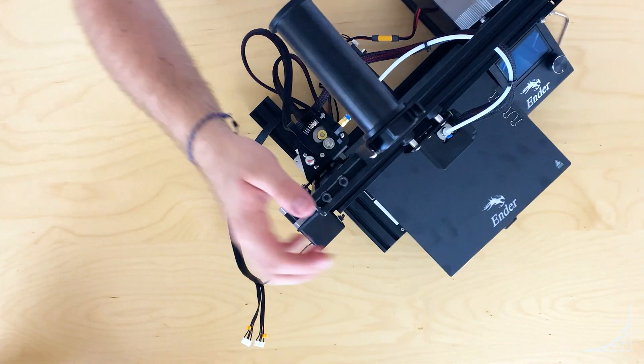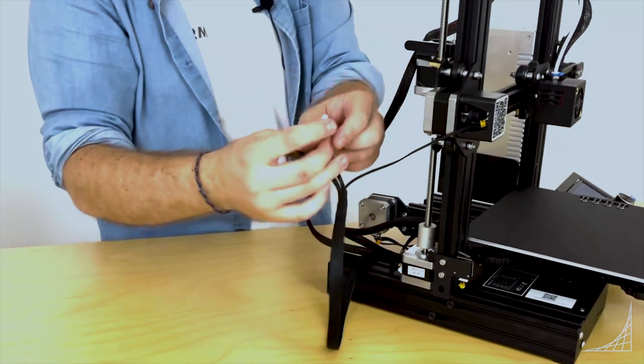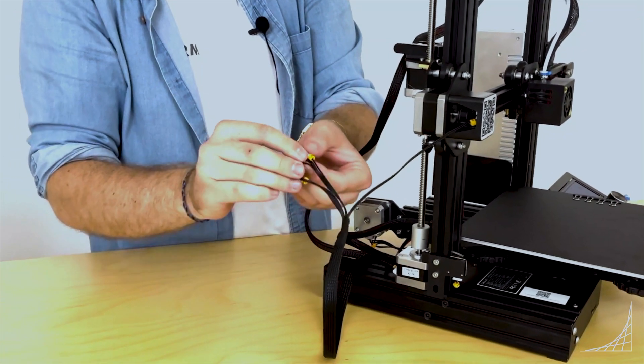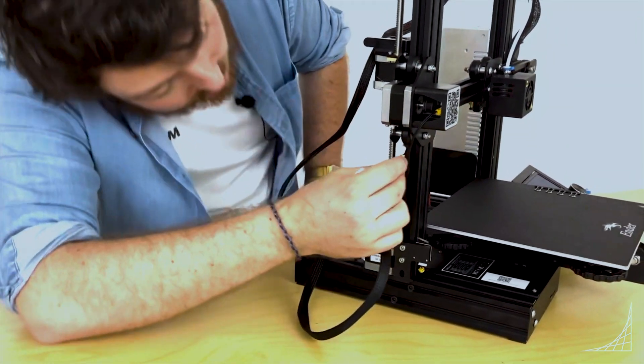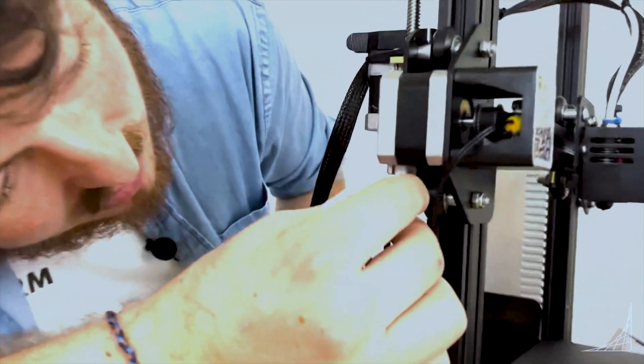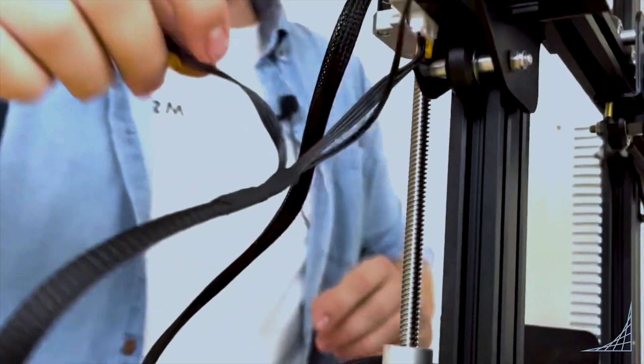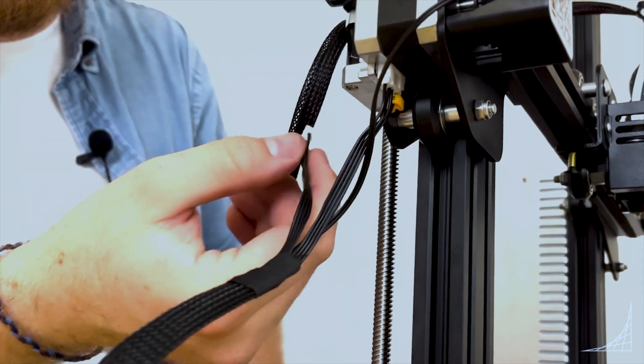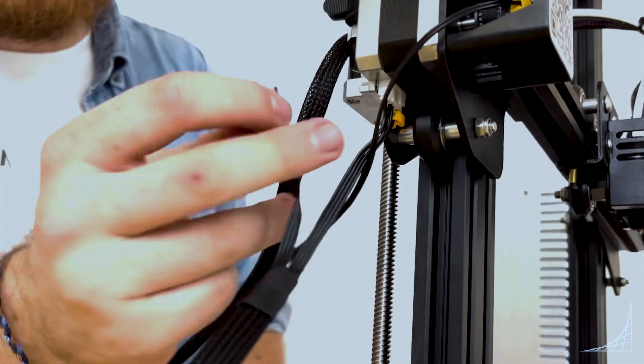There we go, that's fitted into place. While we're here, we can also plug in the X motor, which is located just underneath, and then right next to it is the E motor. Remember, there is no E limit switch.